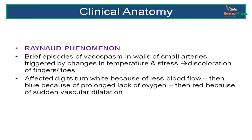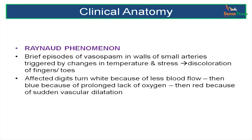Raynaud's phenomenon is a disease of the arteries where there are episodes of vasospasm — the lumen of the vessel suddenly goes into a contracted state. This reduces blood flow to the area supplied by the respective vessel. If it happens in the digits of the hand, they become blue because of prolonged lack of oxygen, then become red because of sudden vascular dilatation.